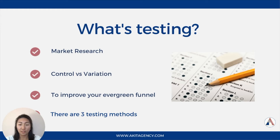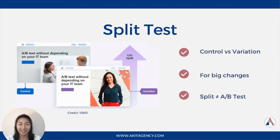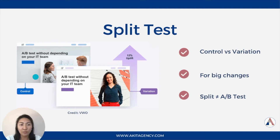Now there are three methods of testing. There is the split test. This basically compares the baseline control sample to a completely different variation of the same sample, and is used for testing bigger changes. Some people use the term split test and A/B testing interchangeably — similar concept, but not the same. As you can see here in this image, the differences between the control and the variation include: the button color is different, the background color is different, the image is different, the placement of the image is different, and the copy placement is different as well.